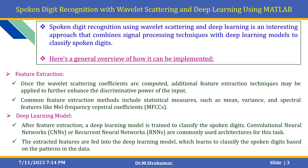The third step is Feature Extraction. Once the Wavelet Scattering coefficients are computed, additional feature extraction techniques may be applied to further enhance the discriminative power of the input. Common feature extraction methods include statistical measures such as mean and variance, and spectral features like mel-frequency spectral coefficients. The fourth step is the Deep Learning Model. After feature extraction, a deep learning model is trained to classify the spoken digits. Convolutional neural networks or recurrent neural networks are commonly used architectures for speech signal processing. The extracted features are fed into the deep learning model, which learns to classify the spoken digits based on the patterns in the data.